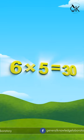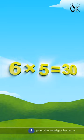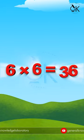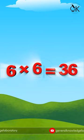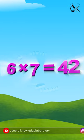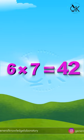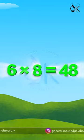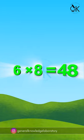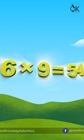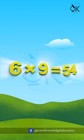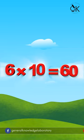Six fives are thirty. Six sixes are thirty-six. Six sevens are forty-two. Six eights are forty-eight. Six nines are fifty-four. Six tens are sixty.